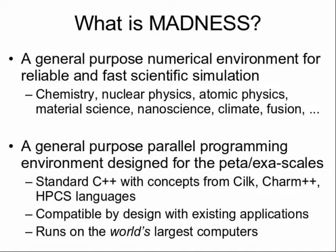In addition to emphasizing scientific computation, meaning numerical computation, underneath MADNESS there's actually a very general purpose parallel programming environment that was motivated by the special needs of MADNESS and explicitly aims to run on the world's very largest computers. For example, presently it runs very well on Jaguar, which is the 2.3 petaflop machine at Oak Ridge National Lab, the largest machine in the US and presently the second largest in the world.